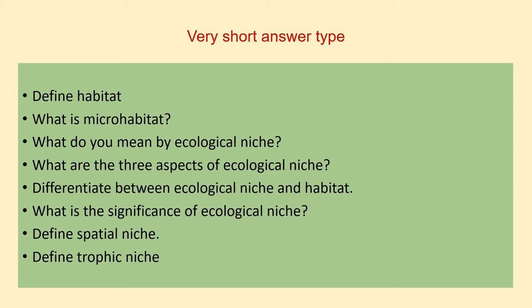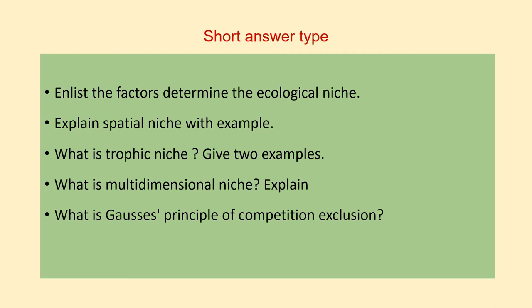The second category of questions are short answer questions, and you have to answer in a single paragraph. Question one is: analyze the factors that determine the ecological niche. Second is: explain spatial niche with example. Next is: what is trophic niche? Give two examples. Fourth is: what is multidimensional niche? Explain. And the last is: what is Gauss's principle of competitive exclusion?